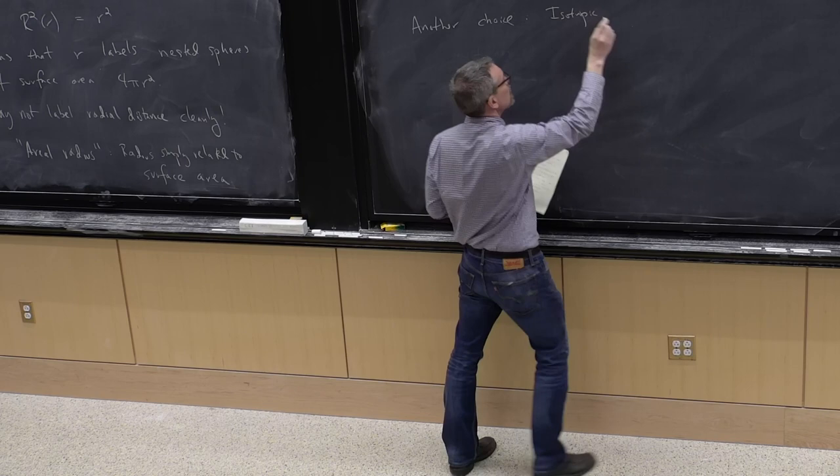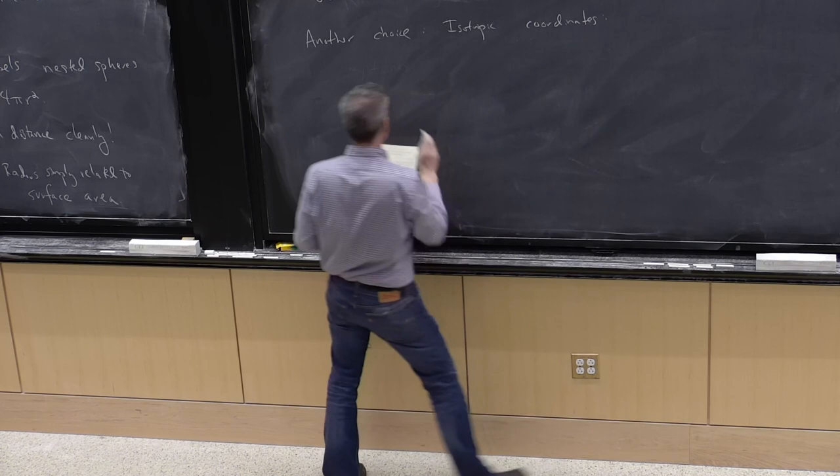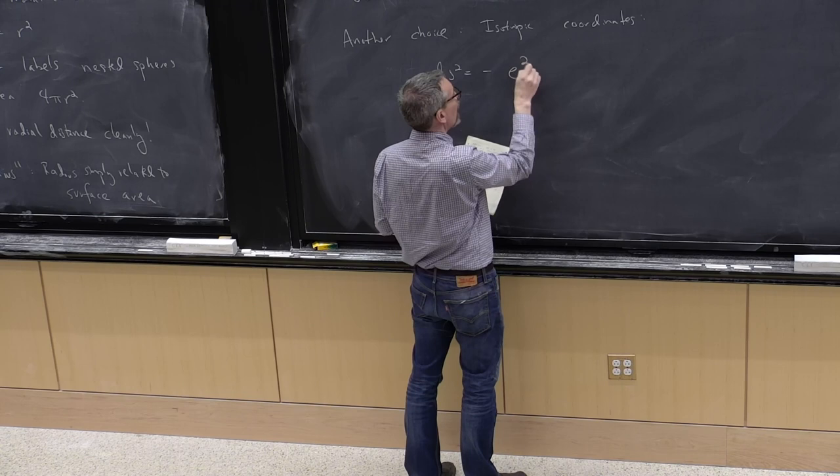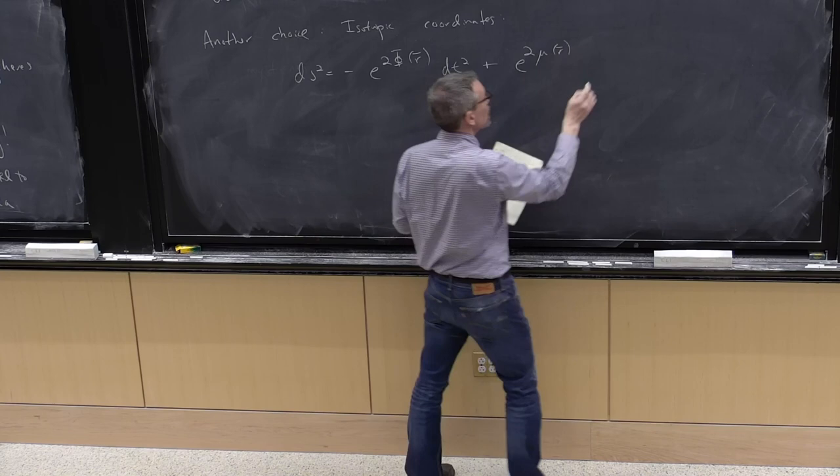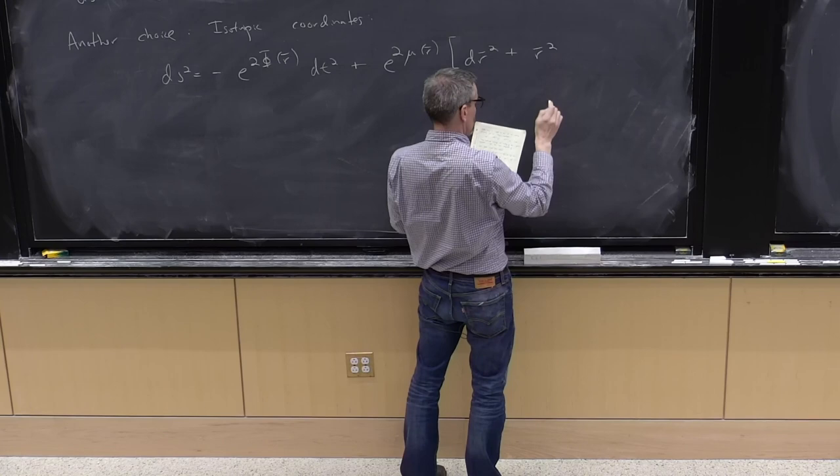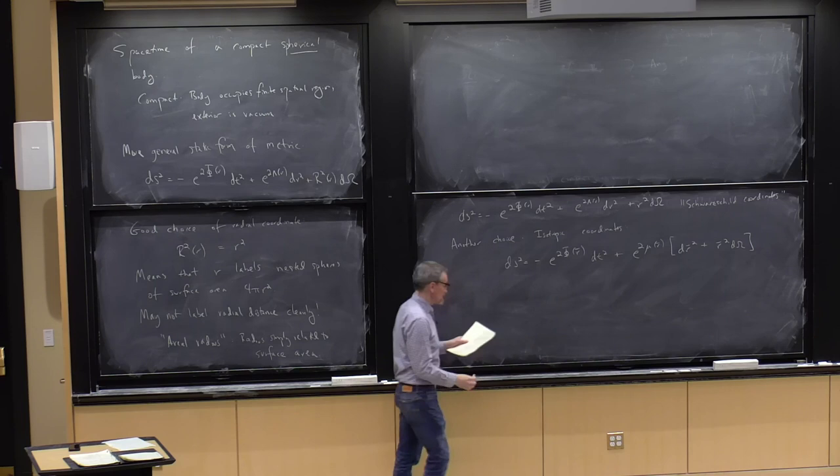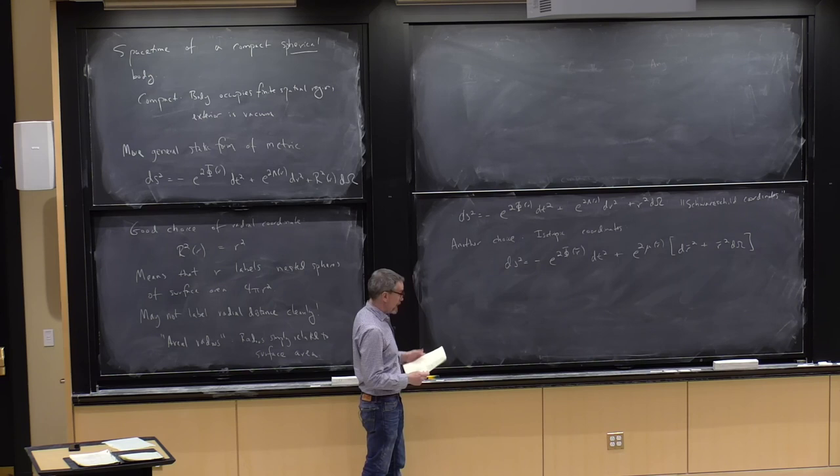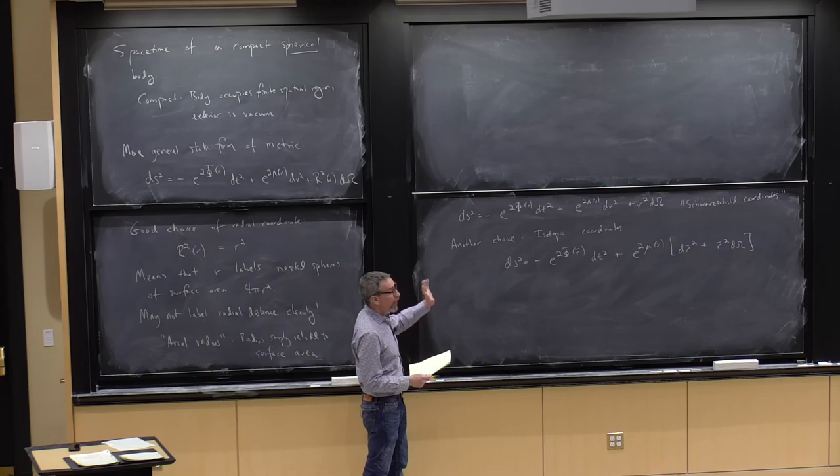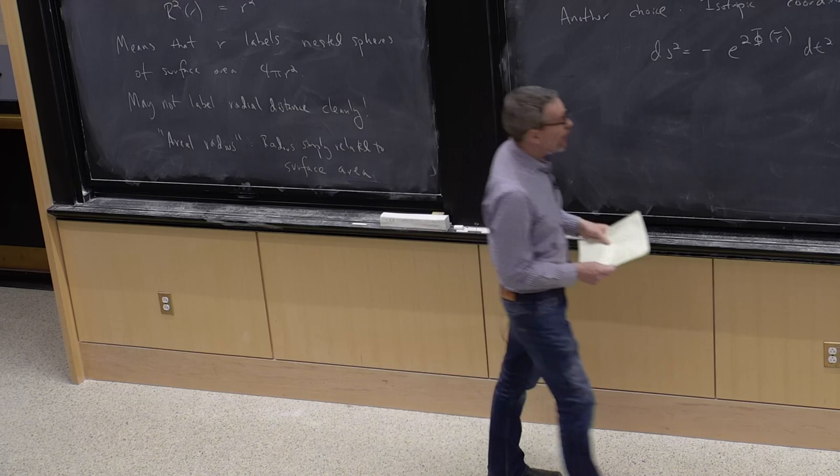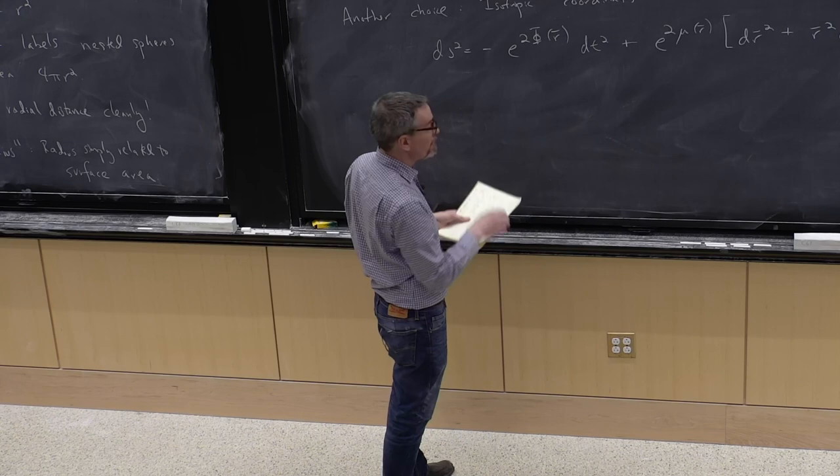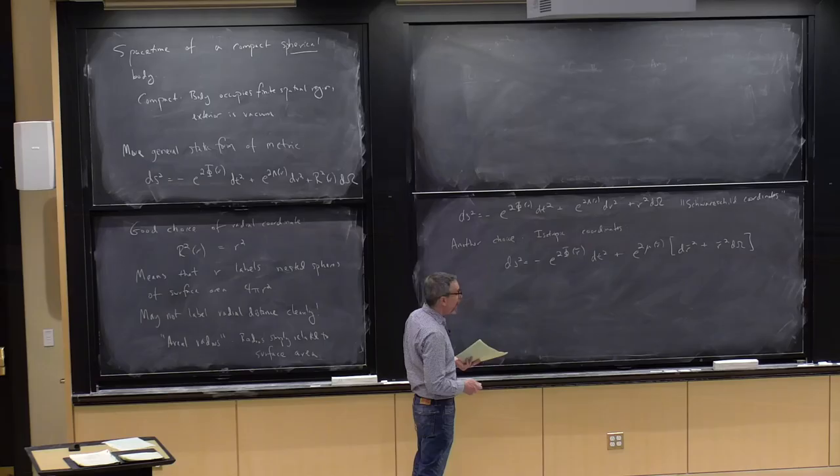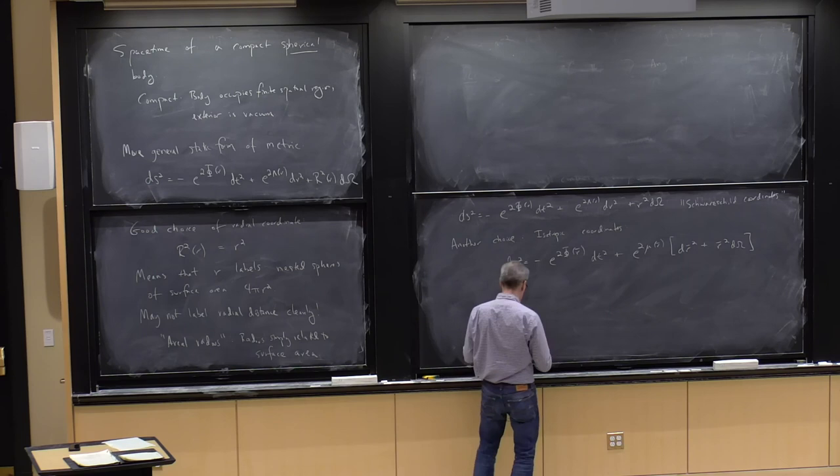Other coordinate choices are possible. And another one that is quite useful for us is what are called isotropic coordinates. So this is a coordinate system in which you choose a radial coordinate which I will call r̄. What this does is this emphasizes the fact that we are working in a spacetime in which all of your spatial slices are fundamentally isotropic. We lose the aerial interpretation of r here.